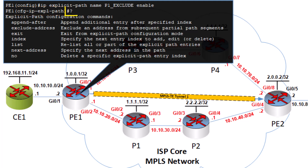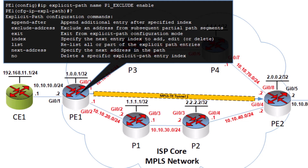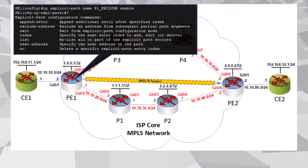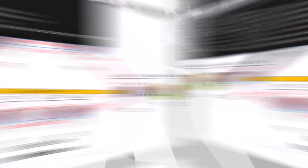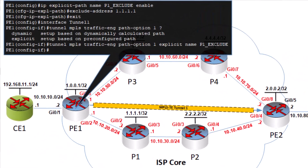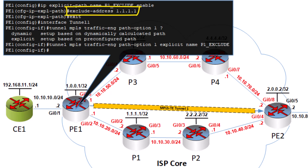Using the context-sensitive help, we can see the options that are made available to us. For including interface addresses or router IDs, we use the next address keyword. For excluding interface addresses or router IDs, we use the exclude address option. Since at this point we want to exclude P1 from the path, we'll use the exclude address option. Now to exclude the P1 router, we issue the command in the explicit path configuration mode. When we issue this command, we define the 1.1.1.1 address, which is our router ID for P1, as the address that belongs to our explicit path entity named P1_exclude.